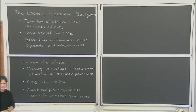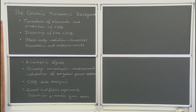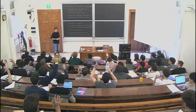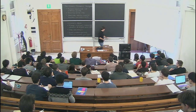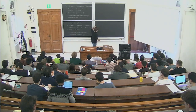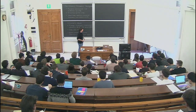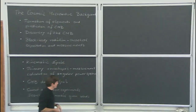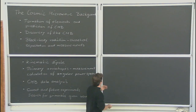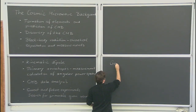Before we start, a quick poll: who has taken a class on general relativity? That's pretty much everyone, which is good. And who has taken a class on cosmology? Essentially the same group. So I can keep the introduction short. I'll still give an introduction because some hands were down, but if that's not long enough, you can come after the lectures and ask. The things I will review briefly include part one: homogeneous cosmology.